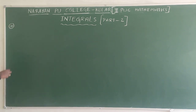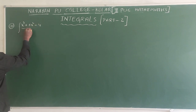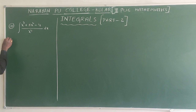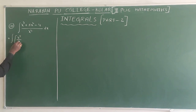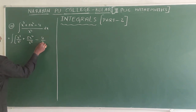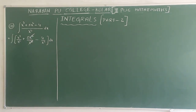In question 11, evaluate integral (x³ + 5x² - 4) / x² dx. First, you will divide separately: integral x³/x² + 5x²/x² - 4/x². Now here x² and x² get cancelled. Here x is 3 times, here 2 times, so 1 time we will get.